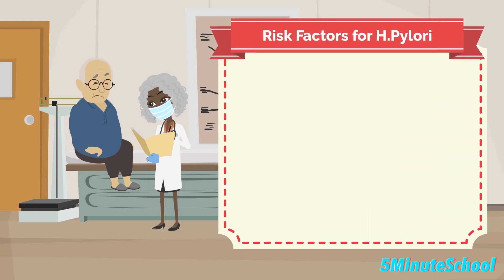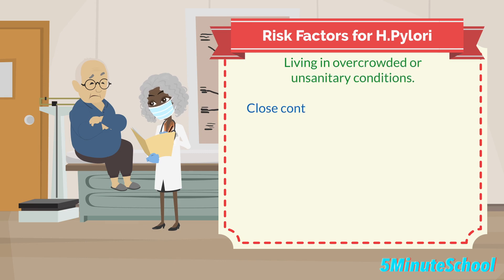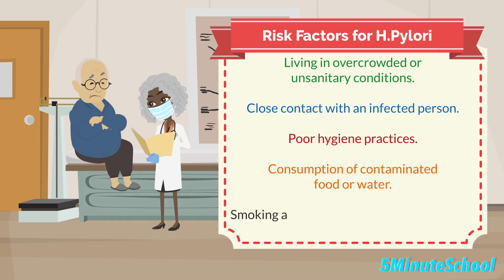In terms of risk factors, several factors can increase the likelihood of an H. pylori infection. These include living in overcrowded or unsanitary conditions, close contact with an infected person, poor hygiene practices, consumption of contaminated food or water, and certain lifestyle factors such as smoking and excessive alcohol consumption.